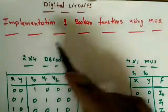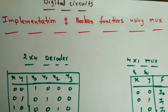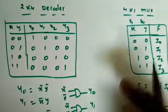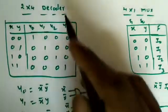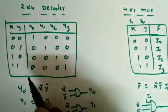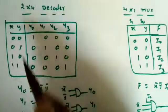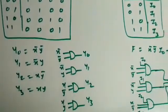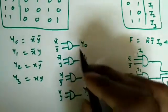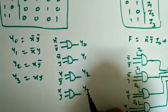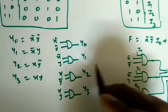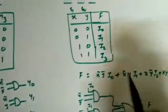In this lecture we will see how to implement boolean functions using a multiplexer circuit. When we discussed the decoder, we saw that we can implement different boolean functions using different types of decoders — a two-variable function uses a 2×4 decoder, a three-variable function uses a 3×8 decoder, and so on. The internal circuit of a decoder generates minterms, and by connecting a sum of minterms we can get a function using an OR gate.